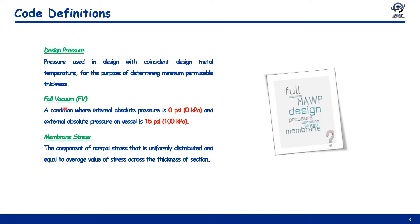Full vacuum (FV), as shown even on vessel nameplates, is a condition where the internal absolute pressure is 0 psi (or 0 kPa) and the external absolute pressure on the vessel is 15 psi or 101.3 kPa. Membrane stress relates to the normal stress component that is uniformly distributed and equal to the average value of stress across the thickness of a section. This applies specifically to thin sections because stresses can be safely assumed not to vary significantly across the thickness.